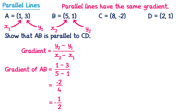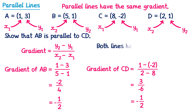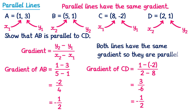Now doing the same for line CD: labelling the coordinates and substituting, the gradient of CD equals y2 minus y1 over x2 minus x1, which is 1 minus negative 2 over 2 minus 8. On the top, 1 subtract negative 2 is the same as 1 plus 2, which is 3. On the bottom, 2 minus 8 is negative 6. So we have 3 over negative 6, which is also equal to negative one half. Both lines have the same gradient, so they are parallel.